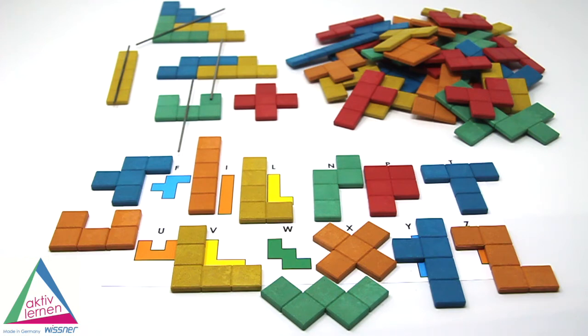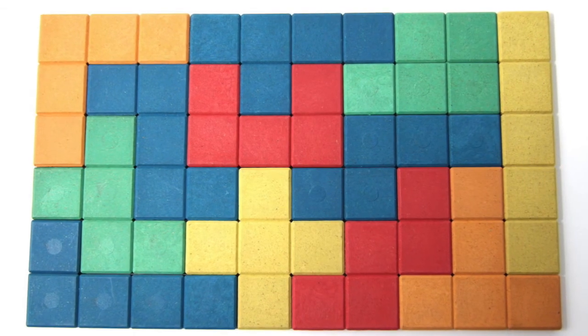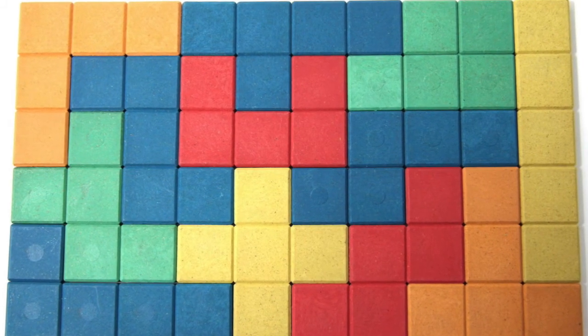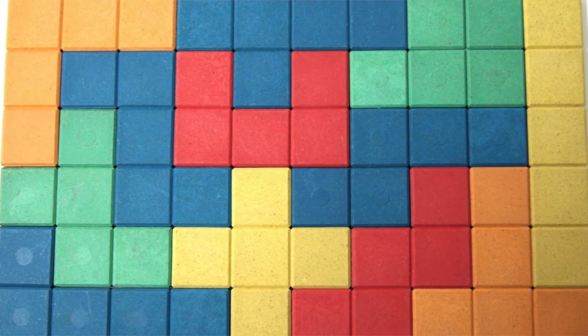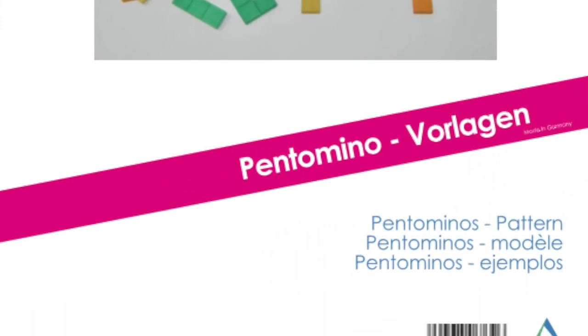All twelve pentominos together have an area of 60 and can be represented without gaps as rectangles: 3×20, 4×15, 5×12, or as shown here, 6×10. A template sheet can be purchased separately to get the very first ideas.